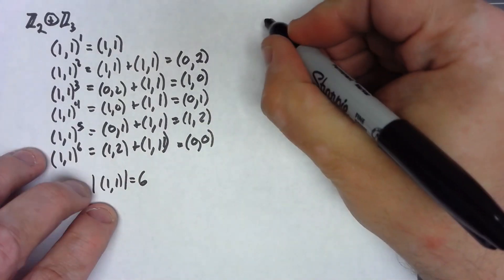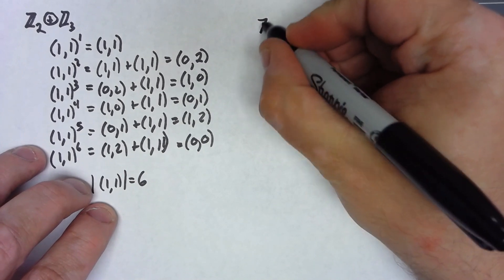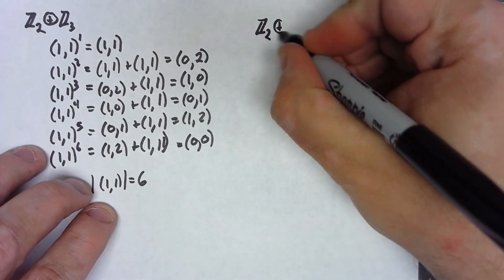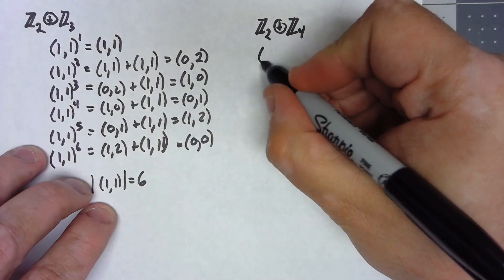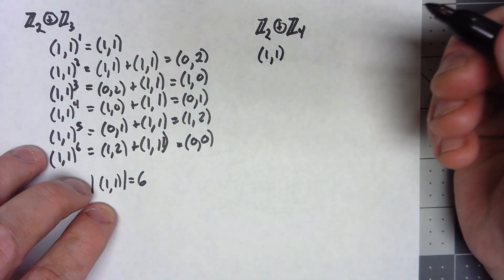However, if we look at another one, if we look at say Z2 plus Z4, let's do the same kind of thing. Try and find the order of (1,1).